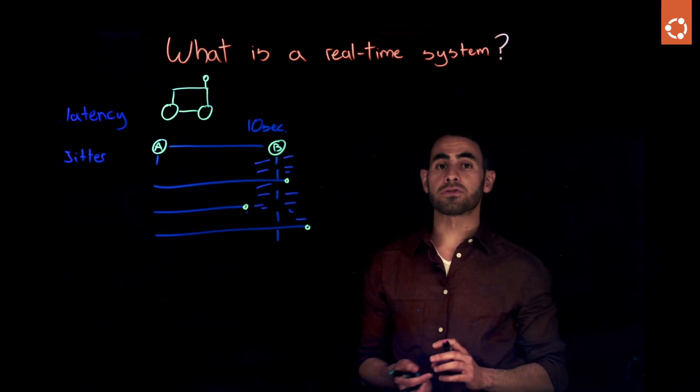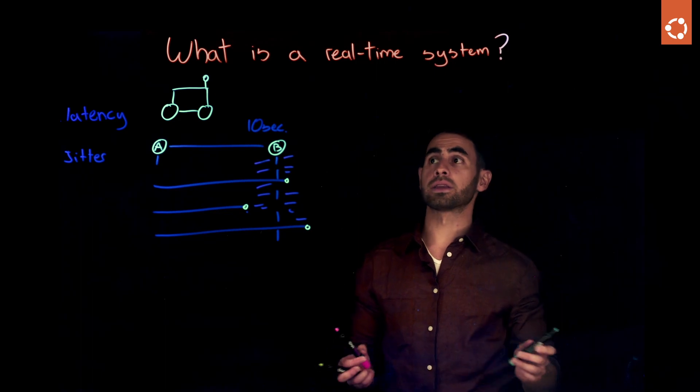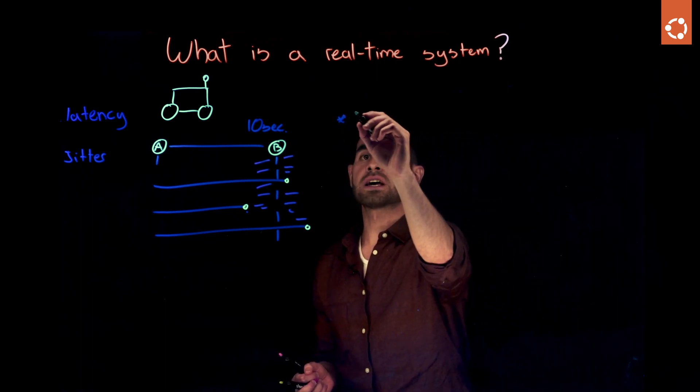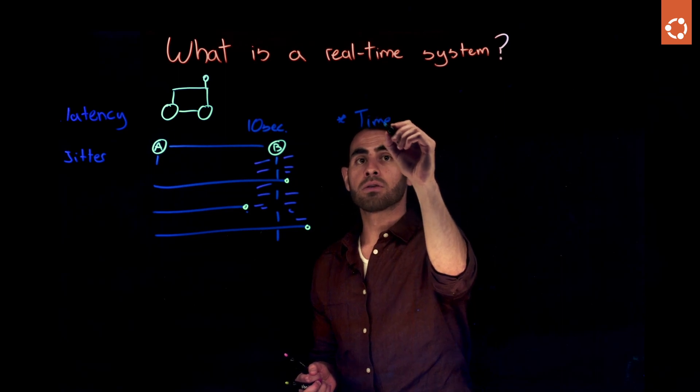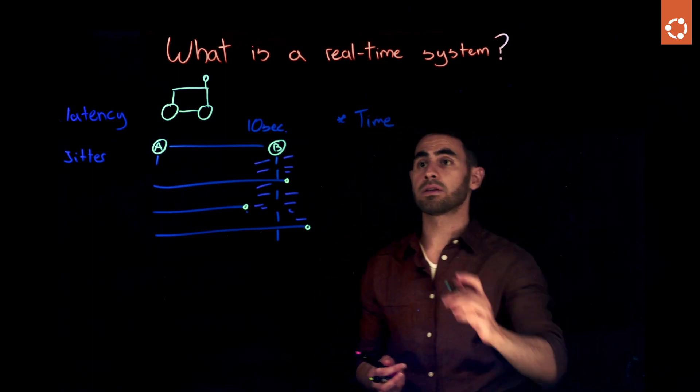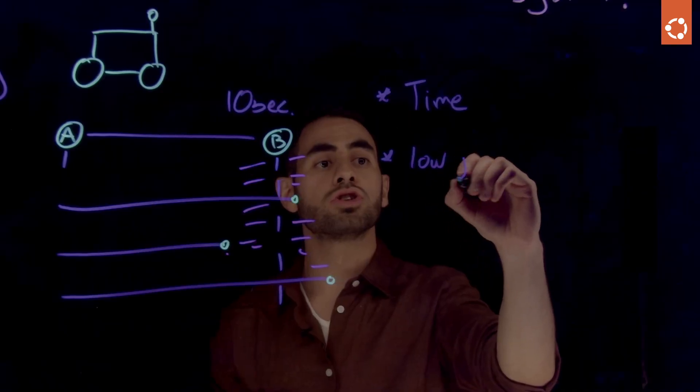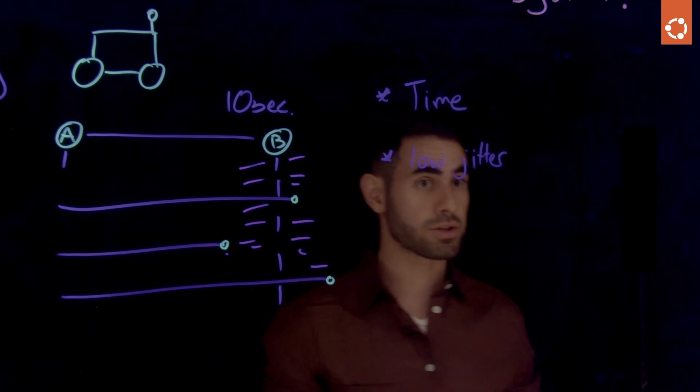And this is important to know because the first two characteristics for a real-time system is that you need to have precise time for some activities and you're looking to get low jitter, low variation.